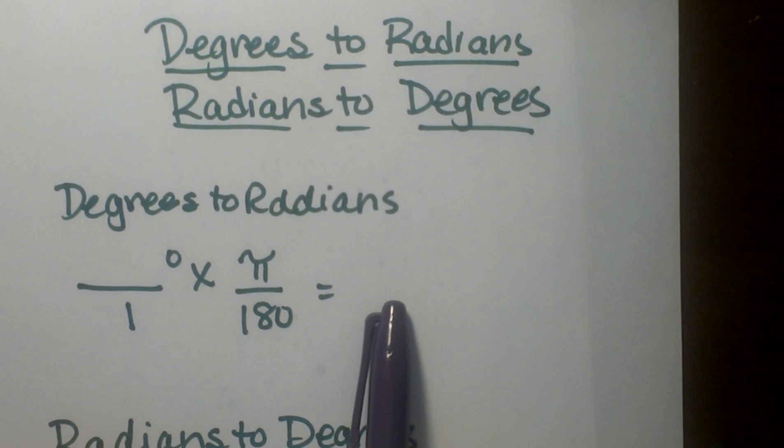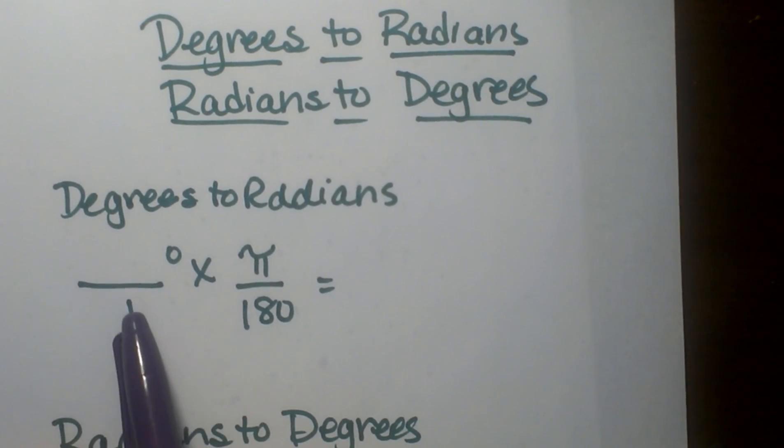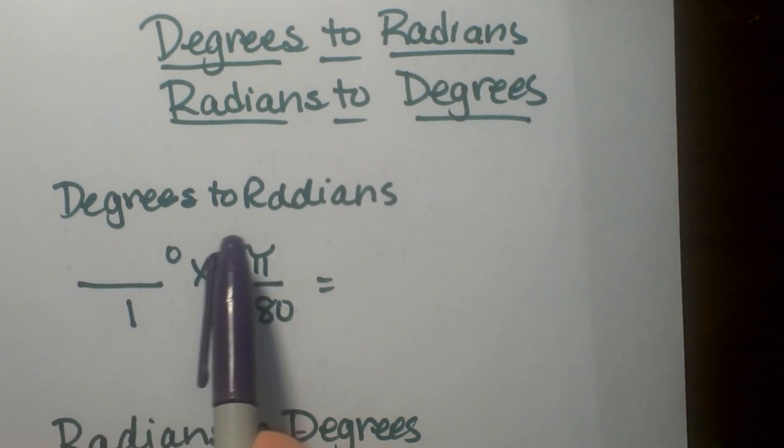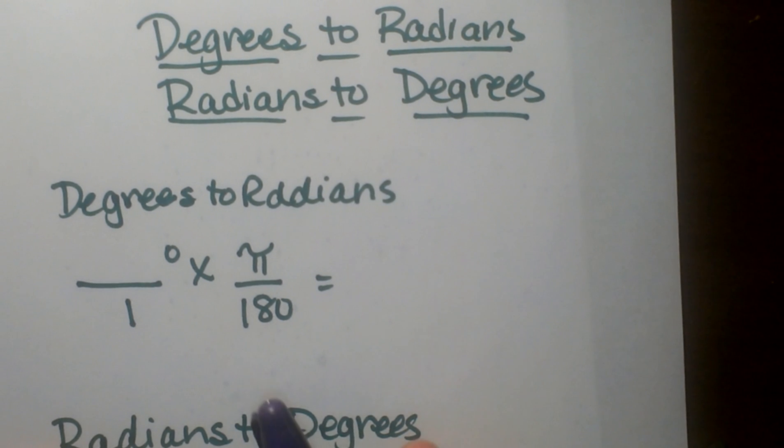What you want to do is, if you're having any trouble or you don't know the formula, basically this is what you do. You take your degree over 1 times the ratio π over 180, because π over 180 is 1.